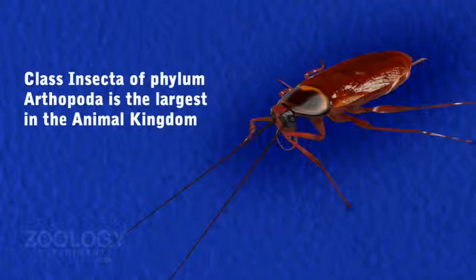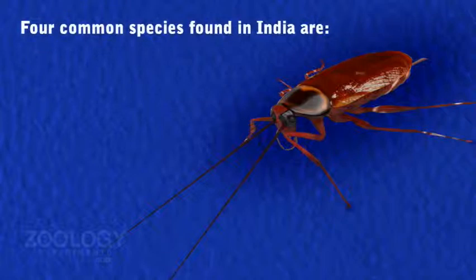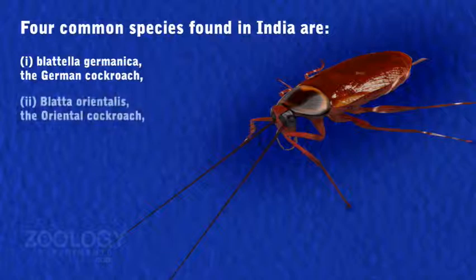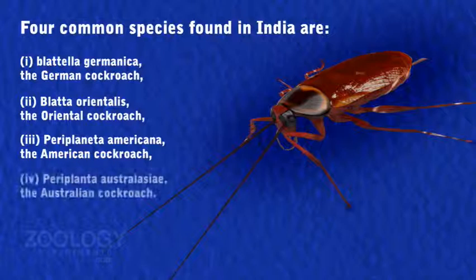In India, four types of cockroaches are found: number one, Blatella germanica, the German cockroach; Blatta orientalis, the oriental cockroach; Periplaneta americana, the American cockroach; and Periplaneta australasiae, the Australian cockroach.